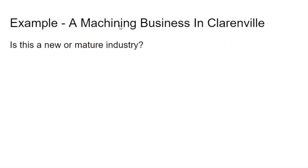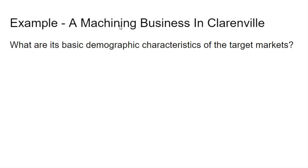Is it a new industry or a mature industry? Oil and gas is mature and well-understood; hydrogen or windmill industries are brand new with fewer competitors. What are the basic demographic characteristics of the target market? If you're selling seniors housing and you have a lot of seniors, the demographic matches. If you're selling products for kids in a seniors area, it doesn't. Demographic factors include age, gender, and income — you need to check that your business matches your customer base.